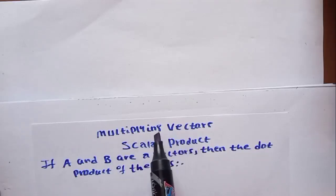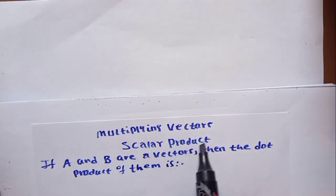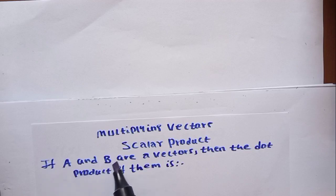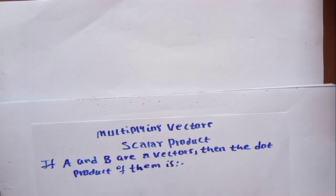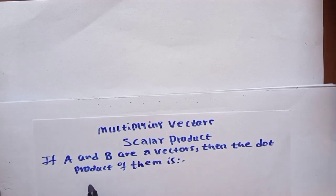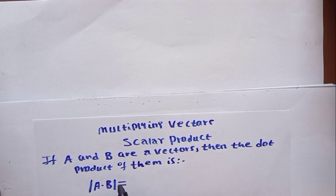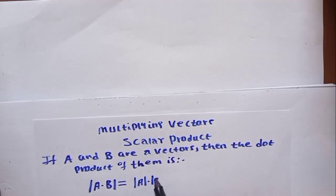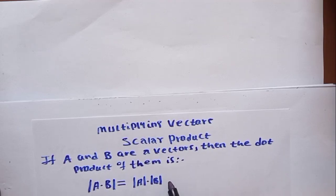In this video, you are going to learn about multiplication of vectors — scalar products. If a and b are vectors, then the dot product of them is given as follows: a dot b equals magnitude of a times magnitude of b times cos theta.